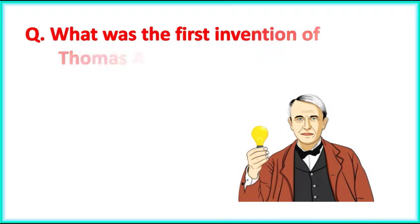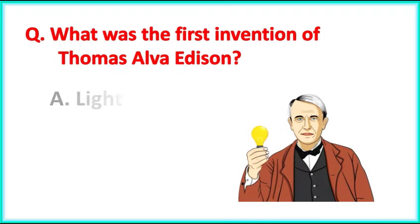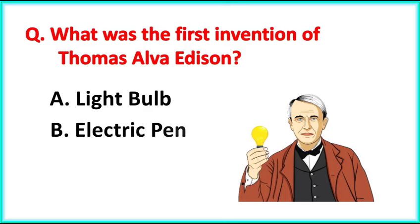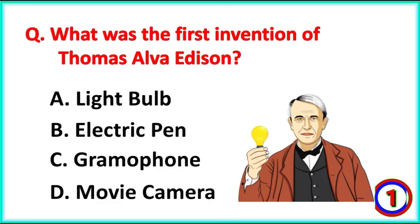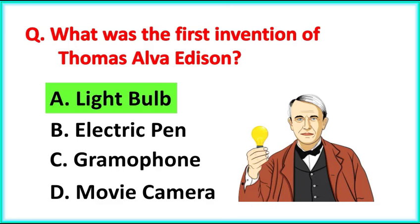What was the first invention of Thomas Alva Edison? The correct answer is Option A. Light bulb.